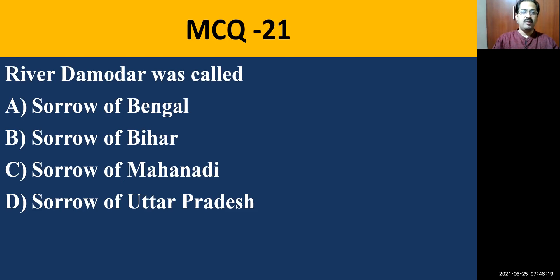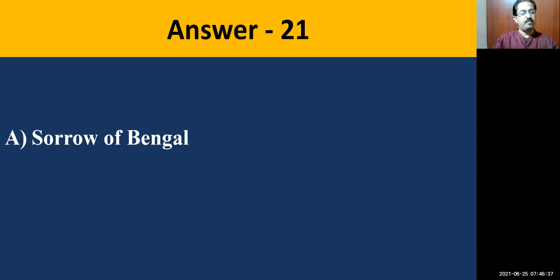MCQ question number twenty-one: River Damodar was called — Sorrow of Bengal, Sorrow of Bihar, Sorrow of Mahanadi, or Sorrow of Madhya Pradesh. Note: the option listed as 'Uttar Pradesh' should be read as 'Madhya Pradesh.' The correct answer is Sorrow of Bengal.